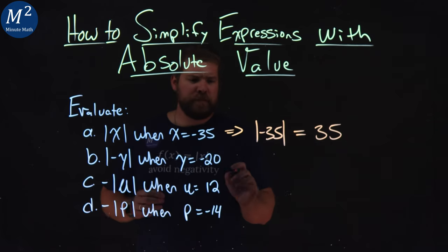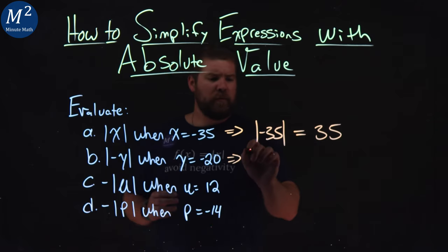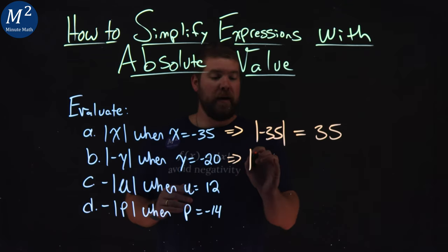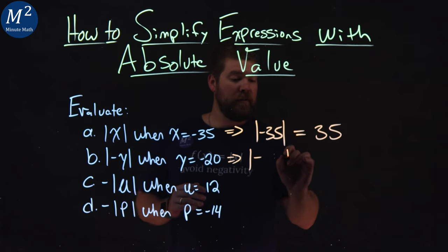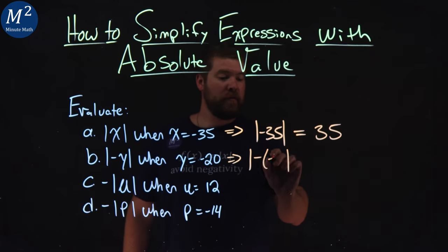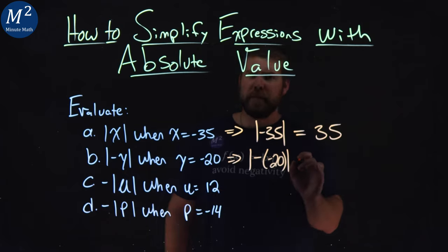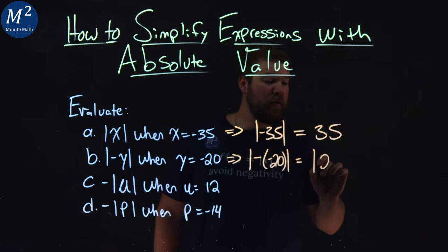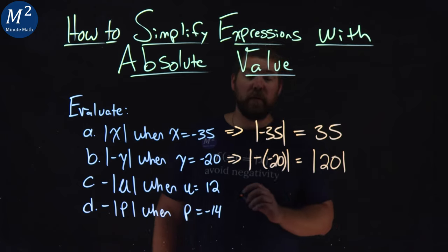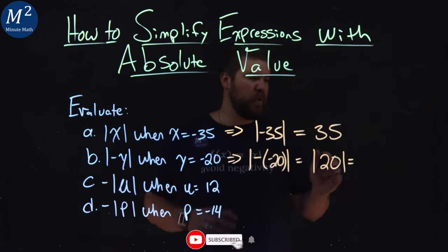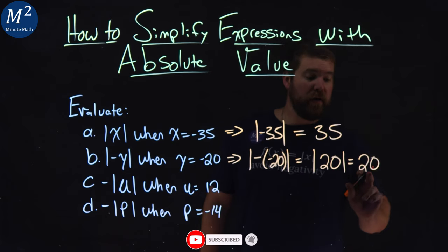Next one is a little more difficult. Absolute value of negative y. So I'm going to write everything except for the y. Absolute value of negative, give me a space here. Y, they tell us, is negative 20. Plug that in for y. Be careful with your negatives here. Negative times a negative is a positive. So the absolute value now of positive 20, and the distance from 20 to zero is 20. So our answer here is 20.